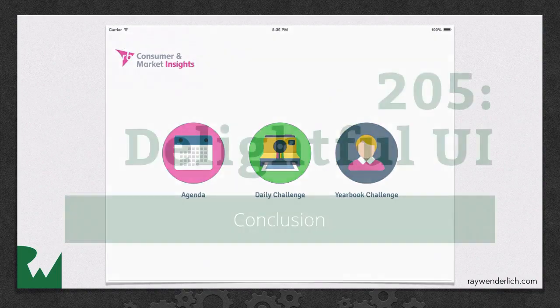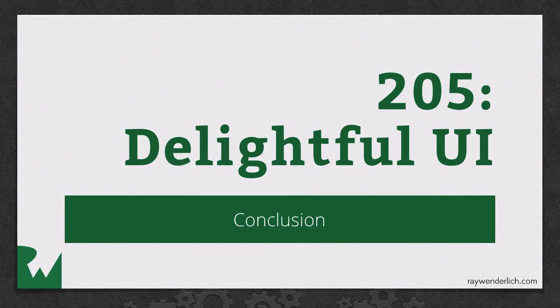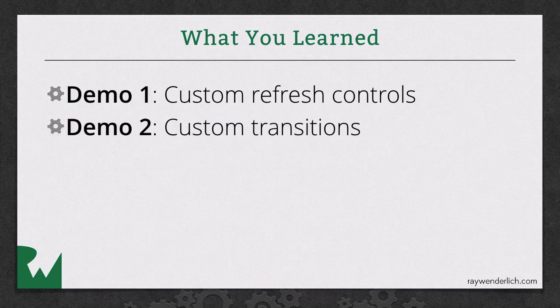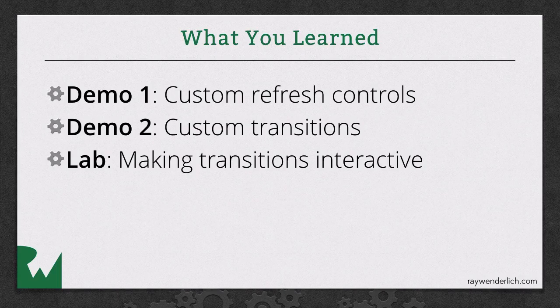It's time to wrap up. What have you learned today? How to make a custom refresh control, how you need to subclass UIControl to achieve it, what the two parts of the refresh action are, and the principles of the animations needed. Then how to make custom transitions without scattering transition logic all over your view controllers. The power of snapshots and keyframe animations. In the lab you made that transition interactive using a gesture recognizer, which added to the playable part of the delightful UI discussed in the introduction.